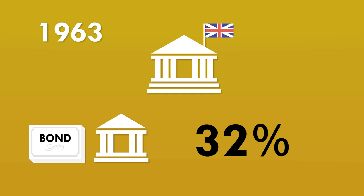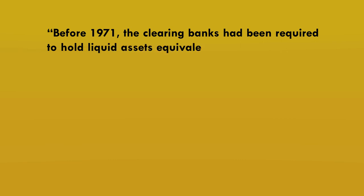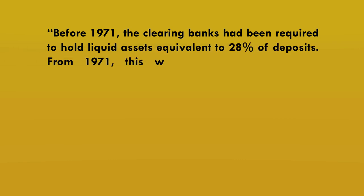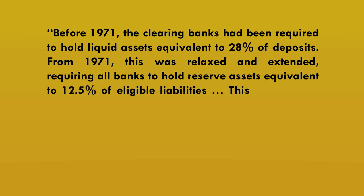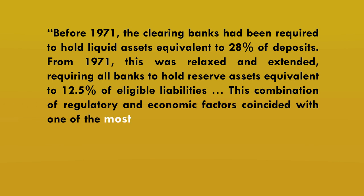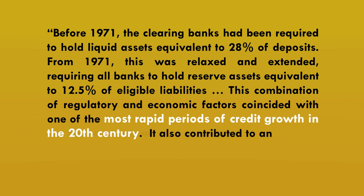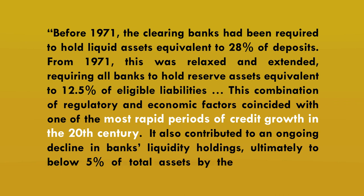In 1963, this liquidity ratio was dropped to 28%. Then, in the words of the Bank of England: before 1971, the clearing banks had been required to hold liquid assets equivalent to 28% of deposits. From 1971, this was relaxed and extended, requiring all banks to hold reserve assets equivalent to 12.5% of eligible liabilities. This combination of regulatory and economic factors coincided with one of the most rapid periods of credit growth in the 20th century. It also contributed to an ongoing decline in banks' liquidity holdings, ultimately to below 5% of total assets by the end of 1970.